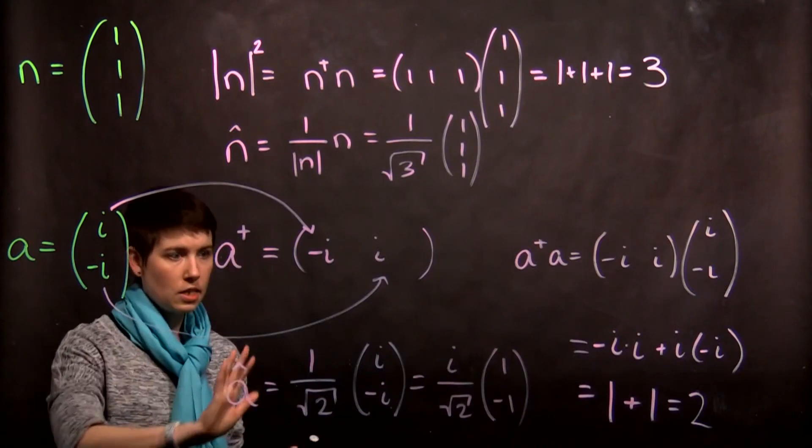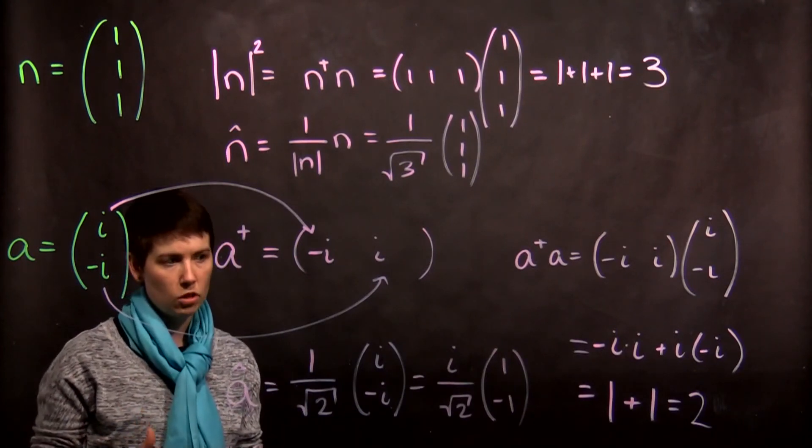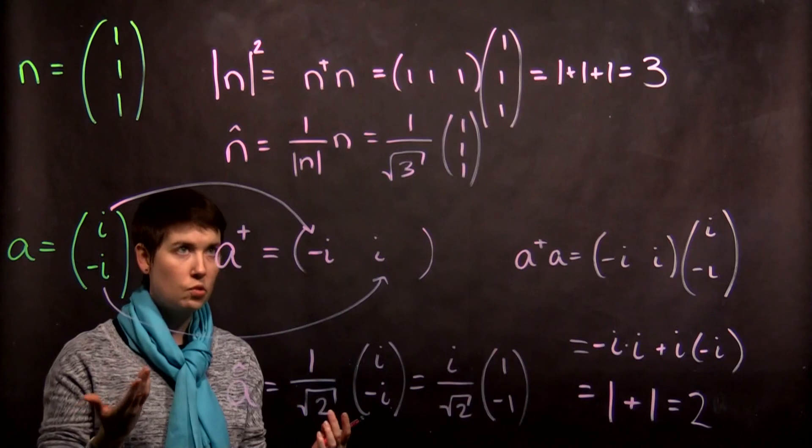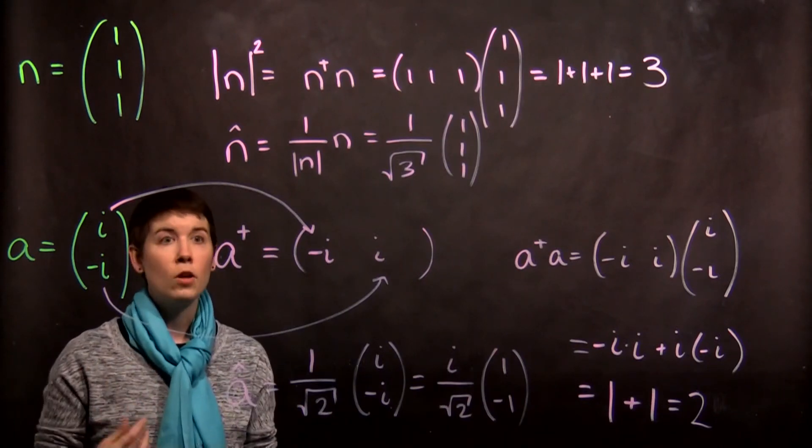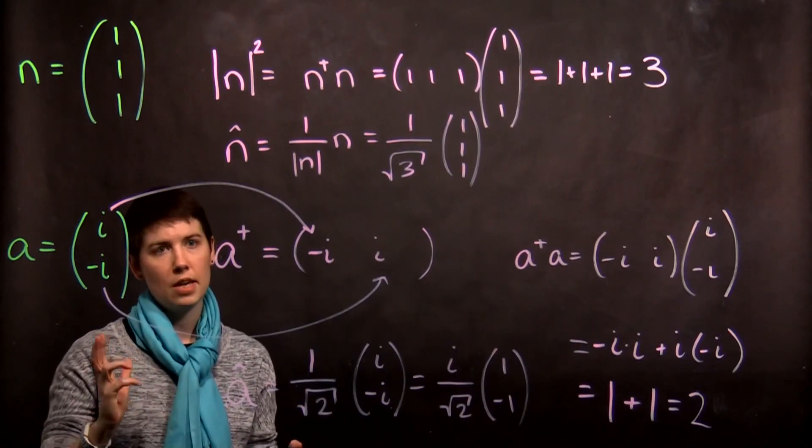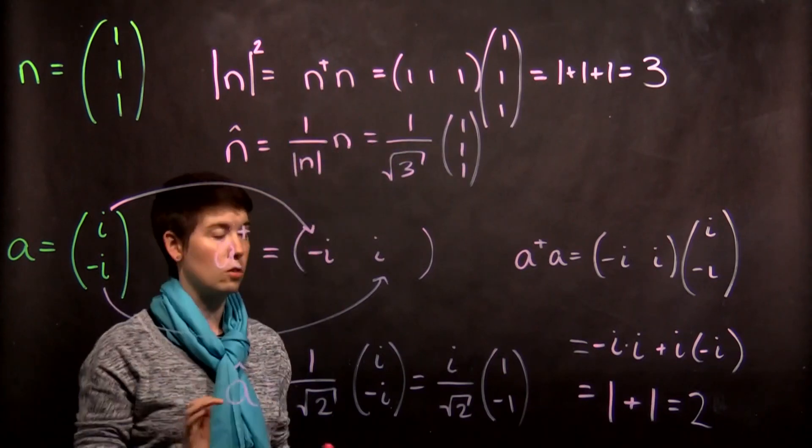So, this is the basic idea of normalizing these vectors. We just need to find what their length is, and then we pull that out. And remember that we always need to take into account that complex conjugate when we do that transpose.